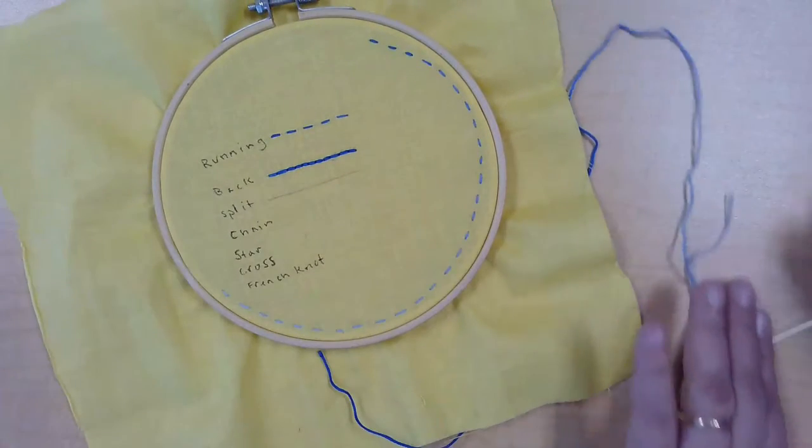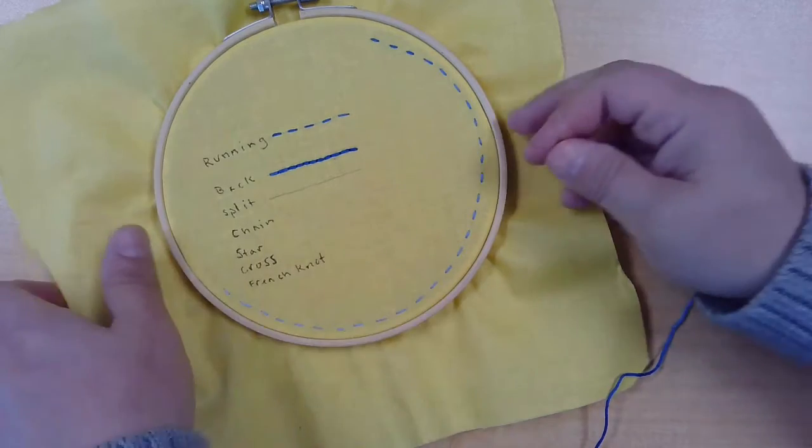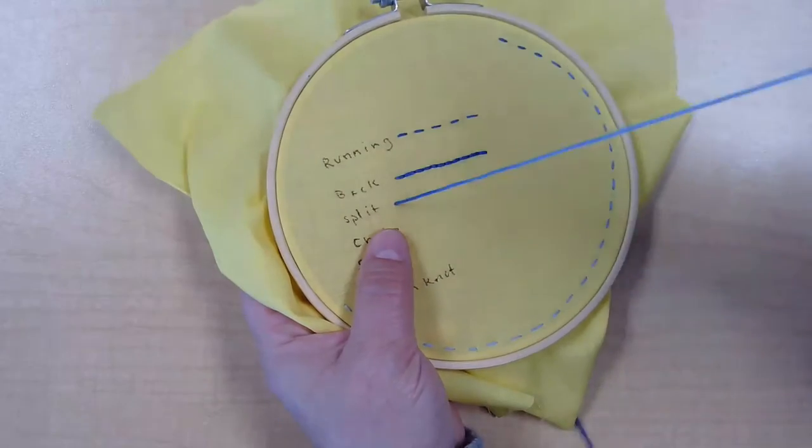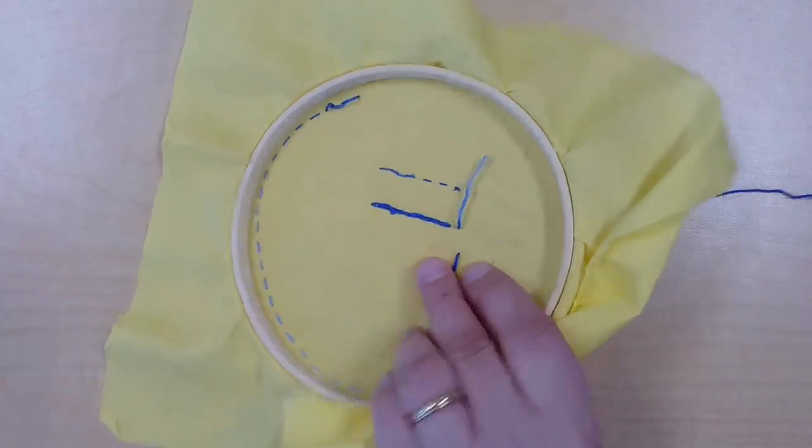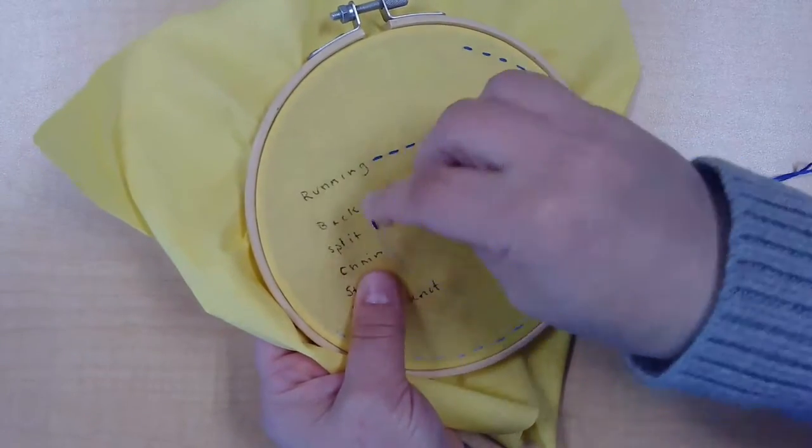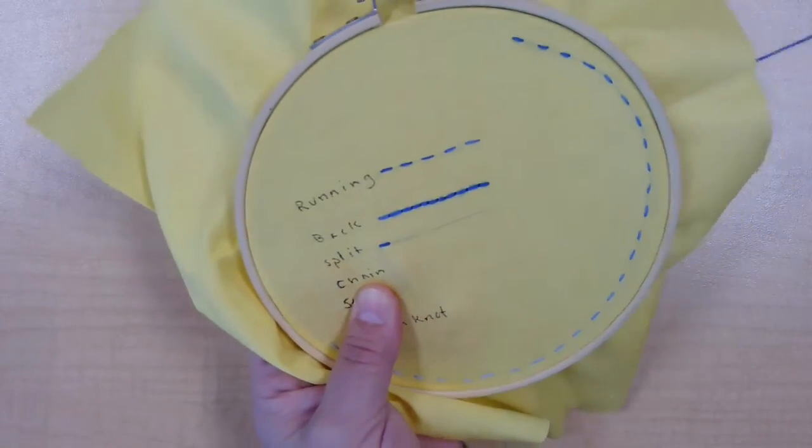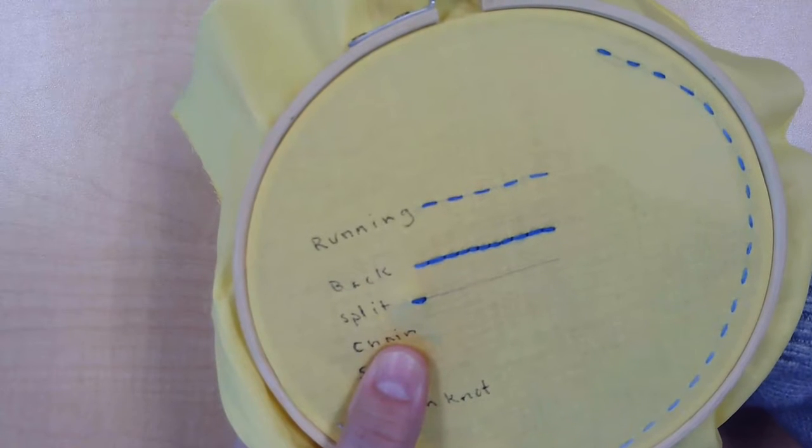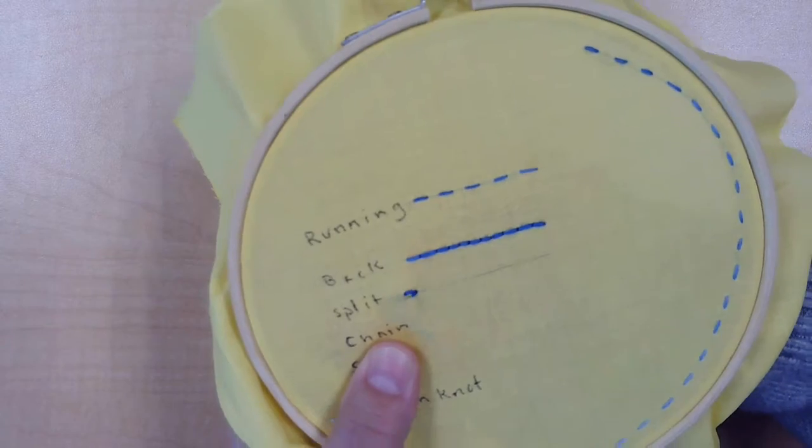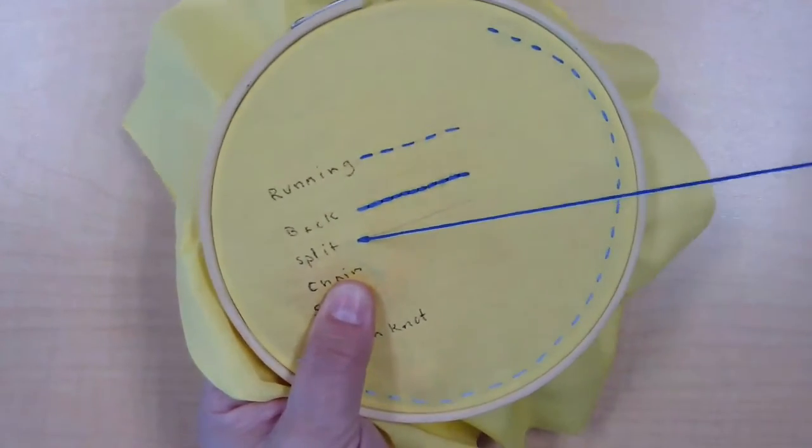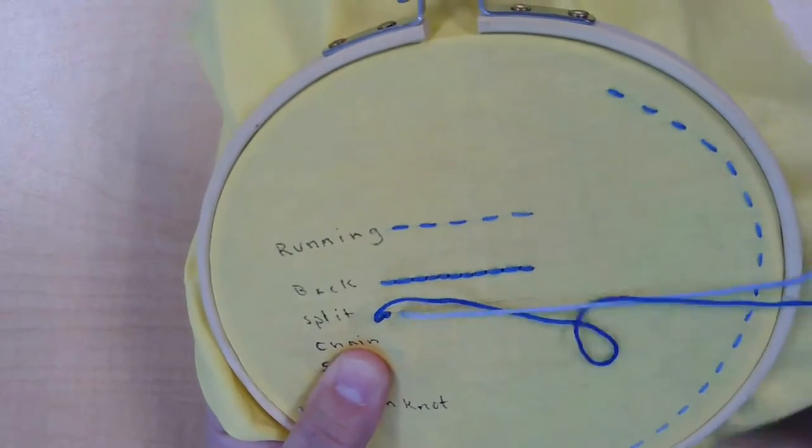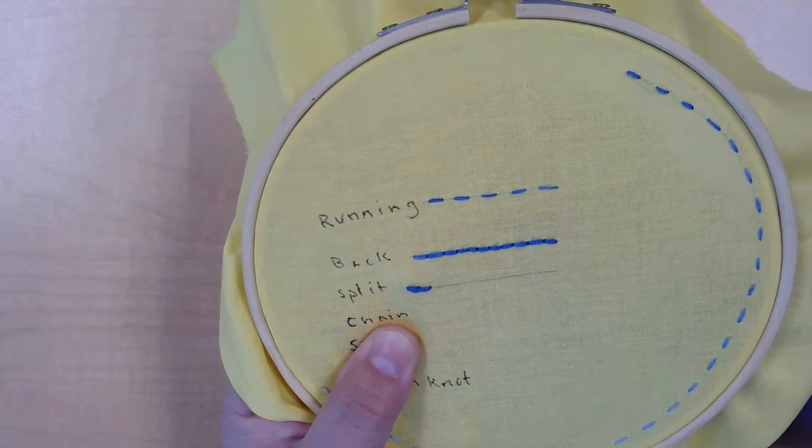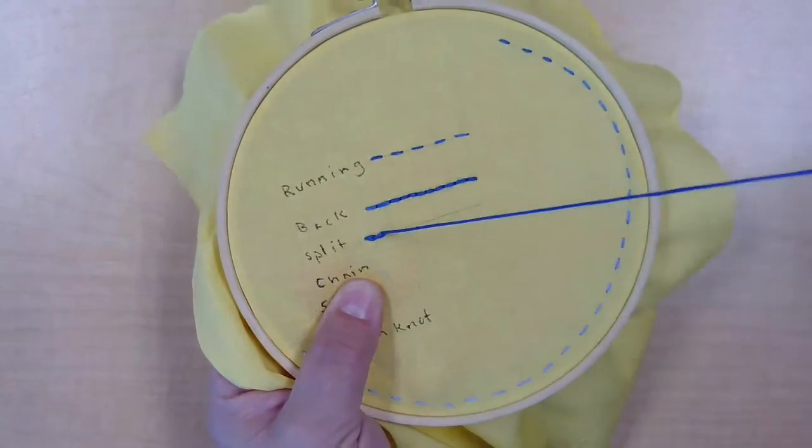Next up today we have the split stitch, and I'm going to work on a line right there. Again, we're coming up from the back and setting our first stitch. Again, a lot like the running and the back stitch, your first stitch is just a normal line. There you go. But the split stitch, as in its name, is called that because your needle comes back up through the middle, well not necessarily the middle, the first third of the stitch you just set. So your needle is going to come back up through that floss and then go back down a stitch length away.